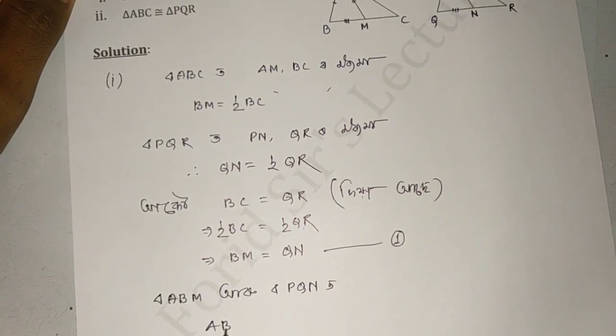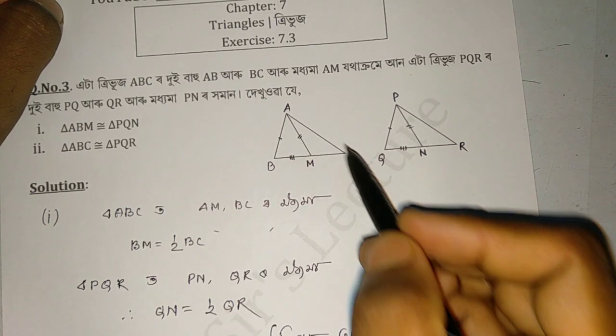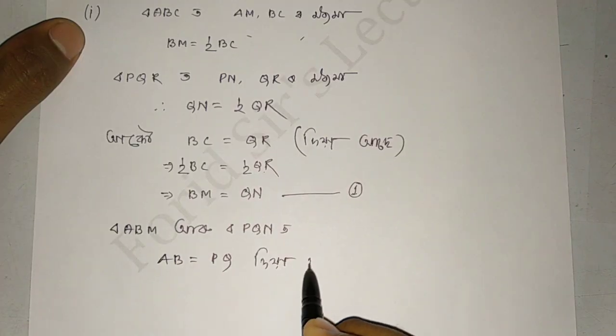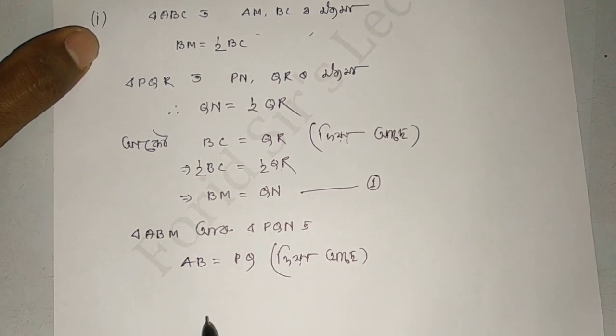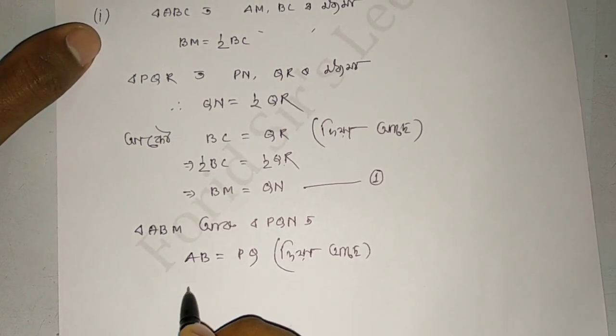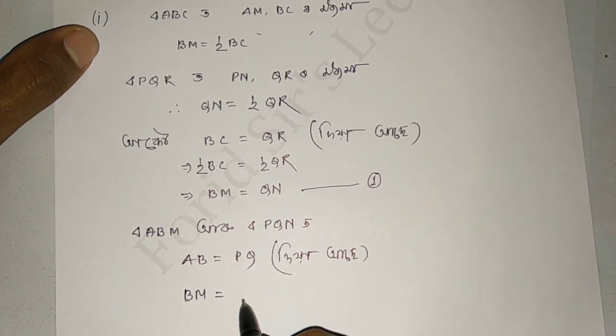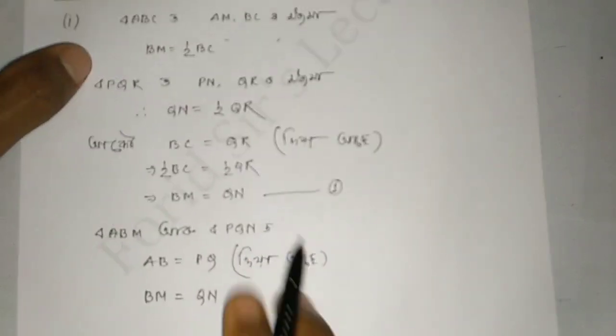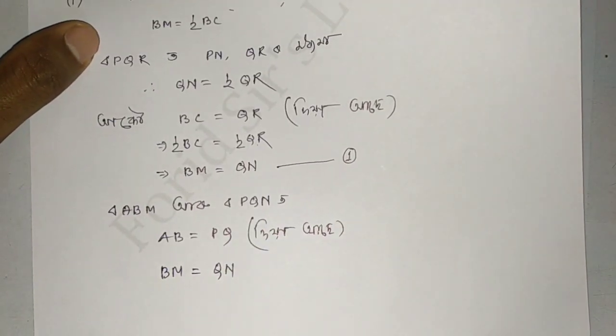Triangle ABM is congruent to triangle PQN. What we can see is that ABM equals PQN. From this, we get that BM is equal to QN. This comes from one or four of them, the number relationship we established.